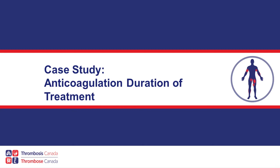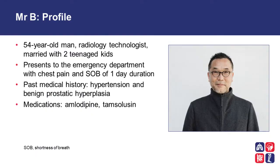Case Study: Anticoagulation Duration of Treatment. Mr. B is a 54-year-old man who is a radiology technologist, married with two teenage kids. He presents to the emergency department with chest pain and shortness of breath of one-day duration. His past medical history consists of hypertension and benign prostatic hyperplasia. His medications include amlodipine and tamsulosin.